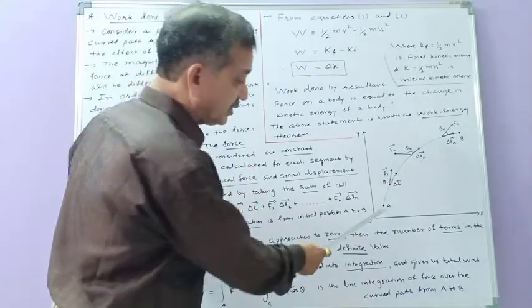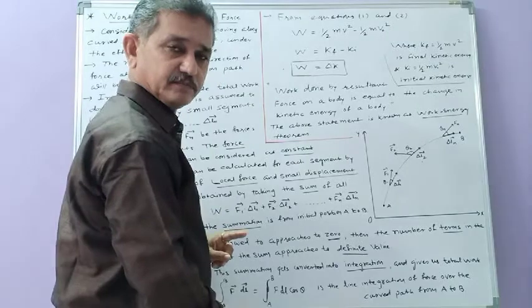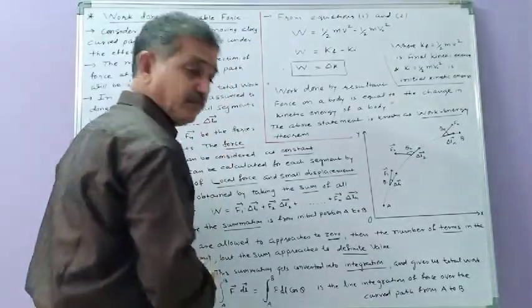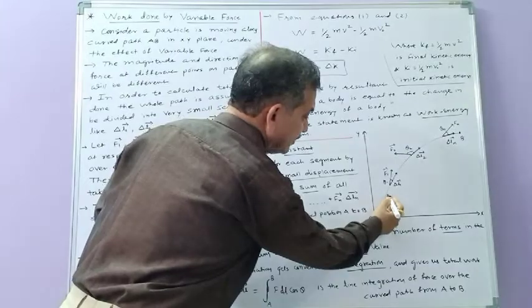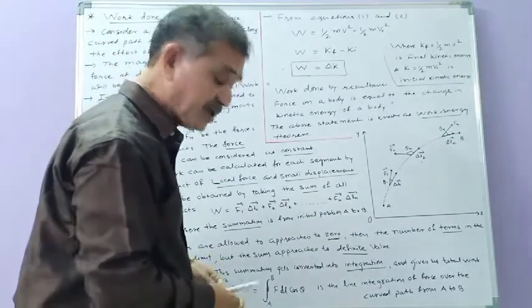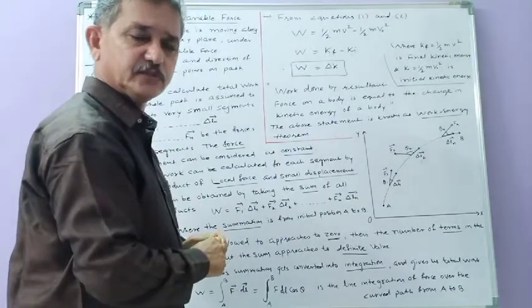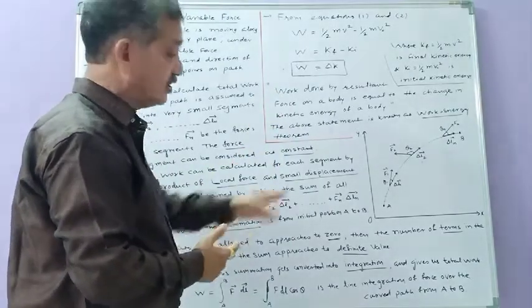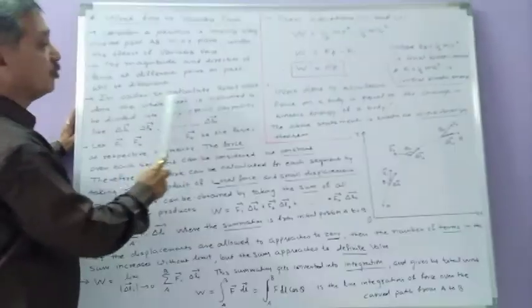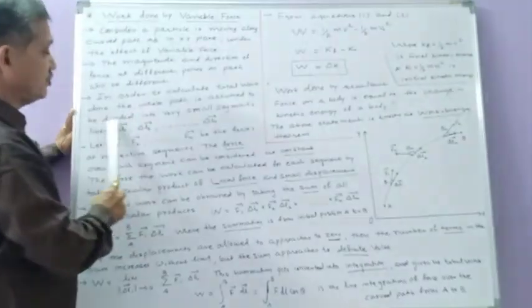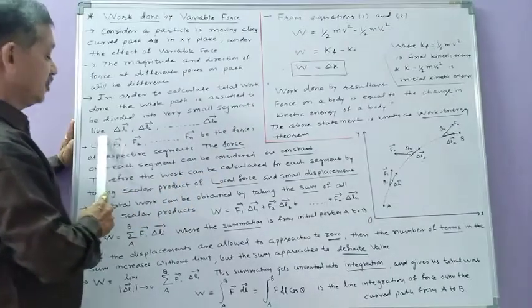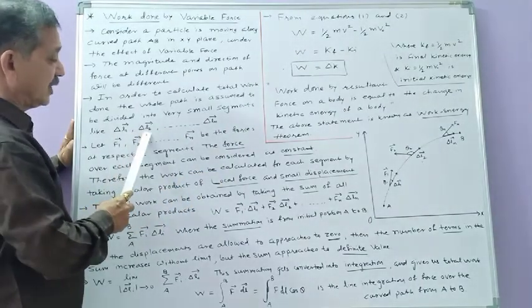To calculate the total work done, the entire path from A to B is divided into a very large number of small segments — ΔL1, ΔL2, ΔL3 and so on. Because these segments are very small, each one can be considered as straight.